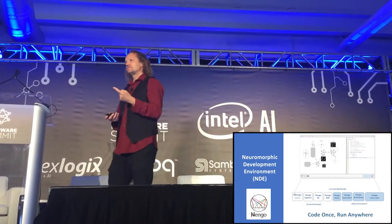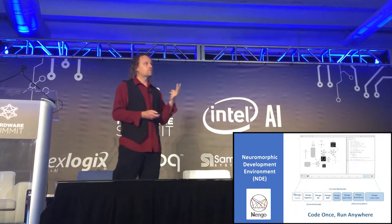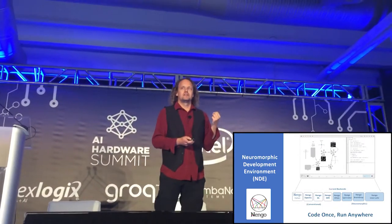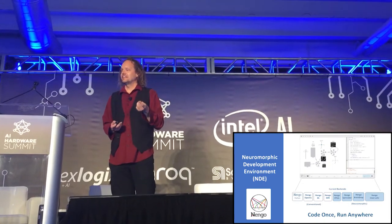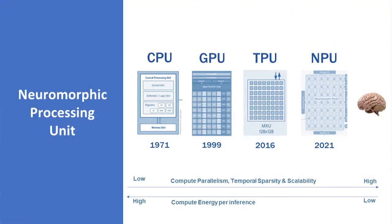We have the theory that says spiking neural networks should be good, we have tools that let us build big models, but we're missing the hardware piece. We can't realize the advantages unless the hardware matches the algorithm. As you go from left to right on this chart, things are becoming more and more brain-like: CPUs are serial and high speed; GPUs are far more parallel; TPUs are designed specifically for artificial neural networks and don't worry about time. And now we have neuromorphic chips, which do worry about time, and this is going to give us significant improvements in scaling.